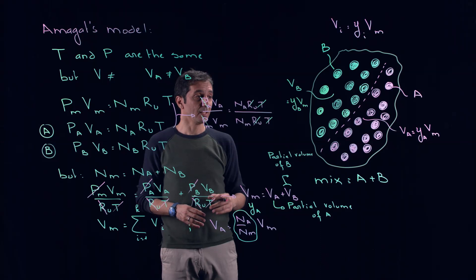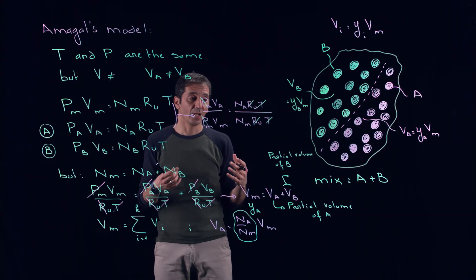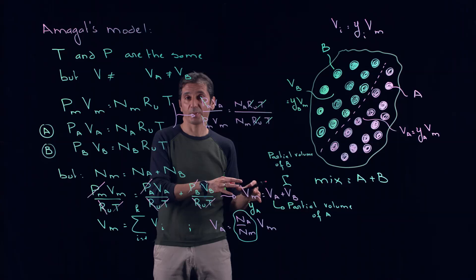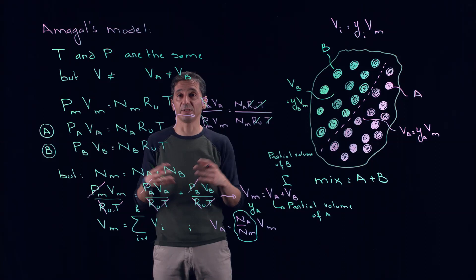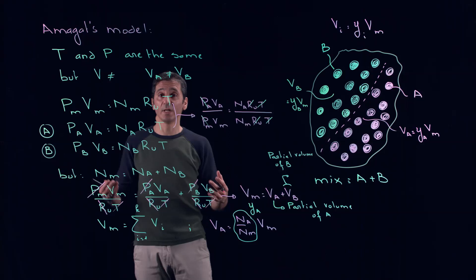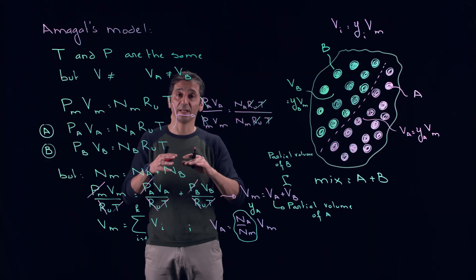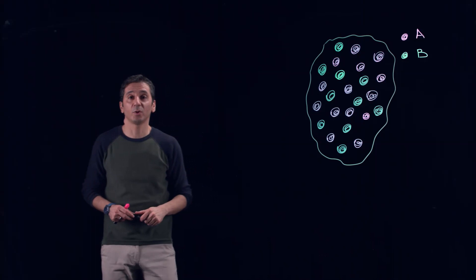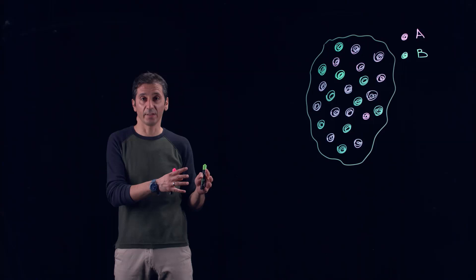Interestingly, this is not quite realistic. We don't typically see gases where one occupies a certain portion and not the other — typically they will occupy the complete volume. Obviously if we have different densities we can have stratification, but in general we don't see a clear separation. Therefore there is a need to introduce another model that accounts for the fact that each component of the gas will occupy all the volume.